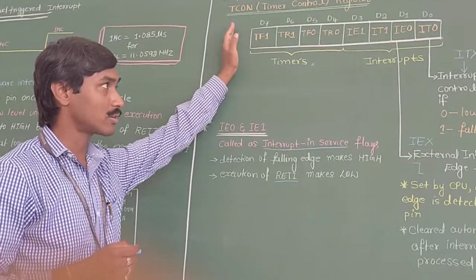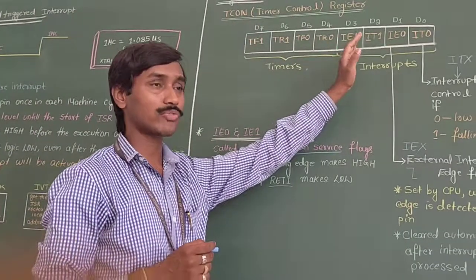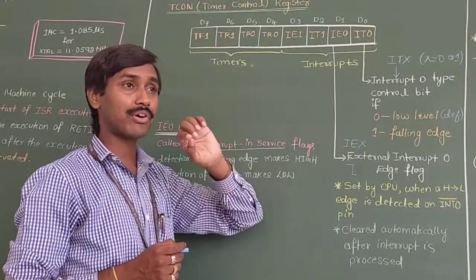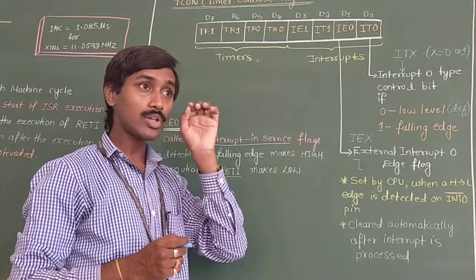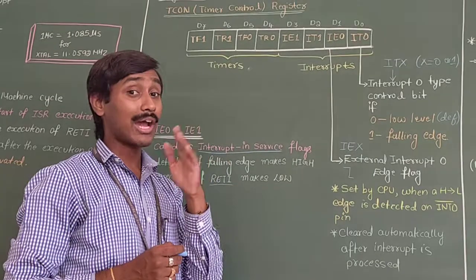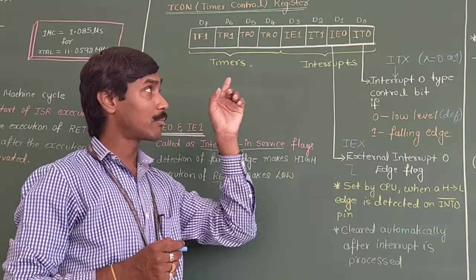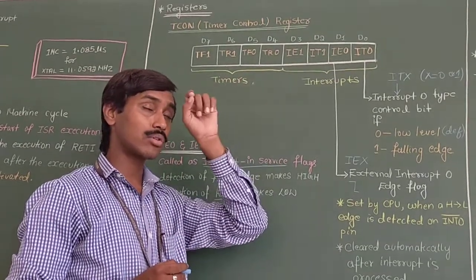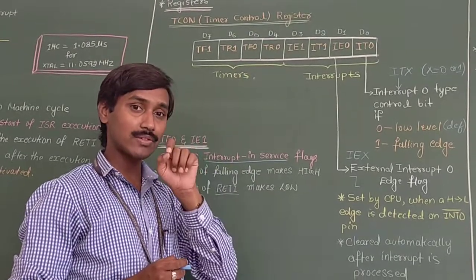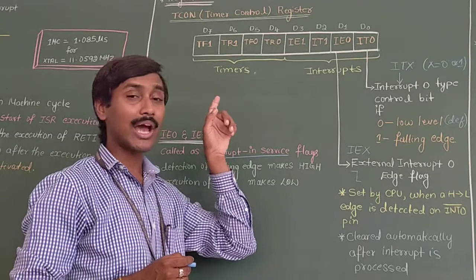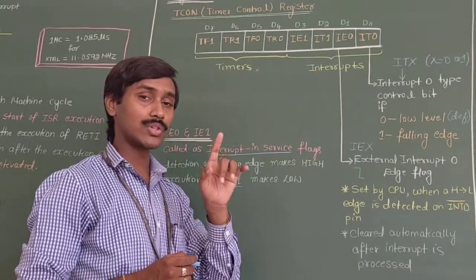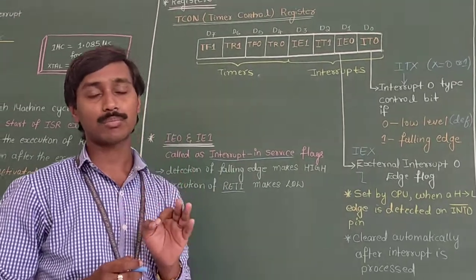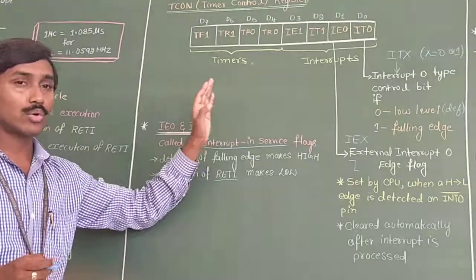In summary, the lower 4 bits of the TCON register are dedicated for interrupts — specifically for defining how external hardware interrupts are activated, either by level trigger mode or edge trigger mode, defined using IT0 or IT1. Whenever a high to low transition (falling edge) is detected, IE0 and IE1 become 1. After execution of the interrupt service routine, they return to 0. That covers the TCON register with respect to interrupts.